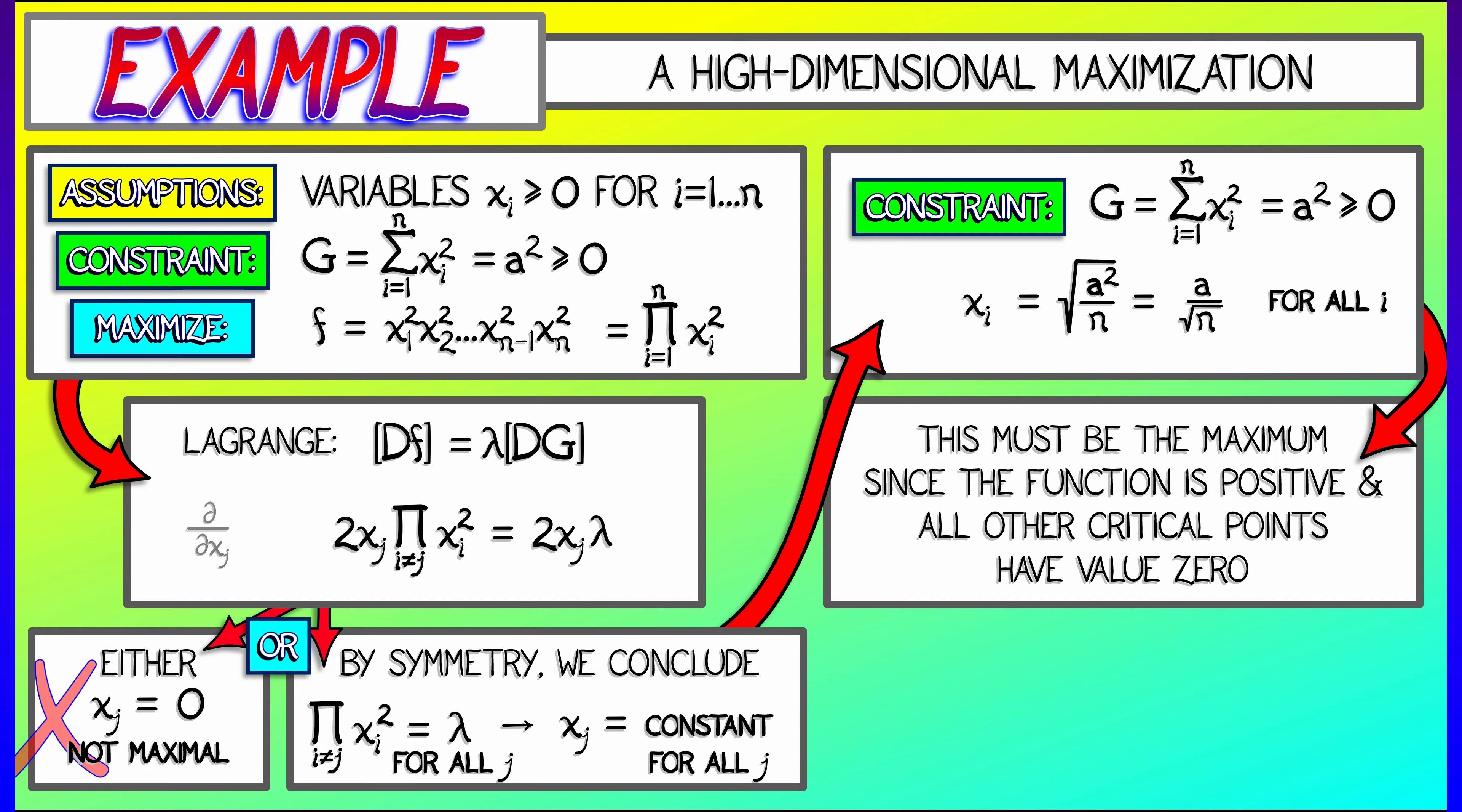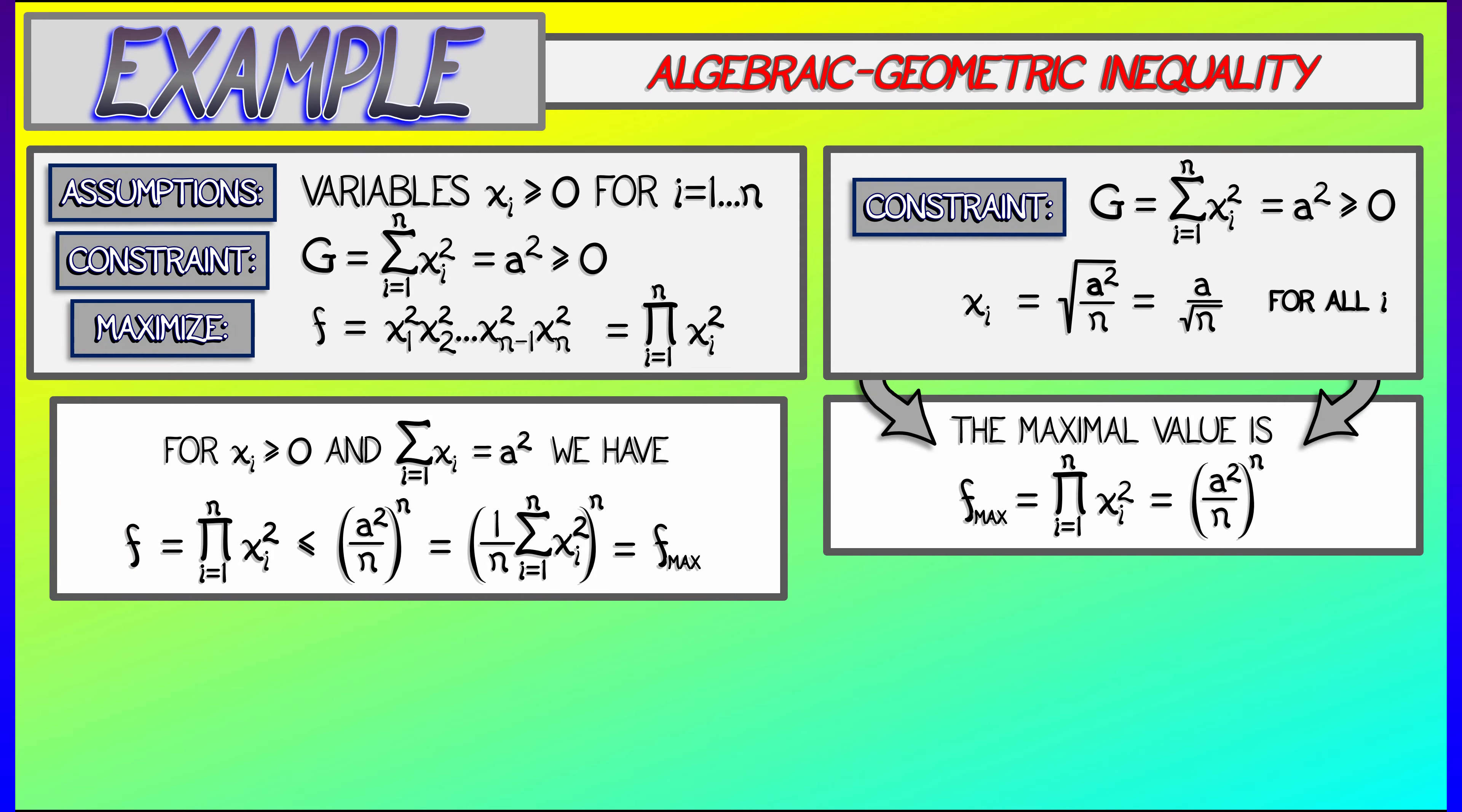Now this has to be the maximum. We just think about it for a little bit. You can see all the other critical points have value zero. So the maximal value is the product as i goes from 1 to n of xi squared. Substitute that in. That's a squared over n quantity to the nth power.